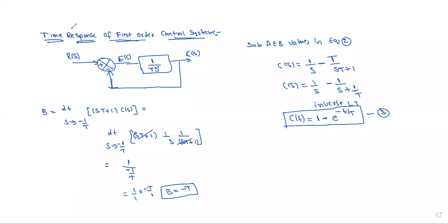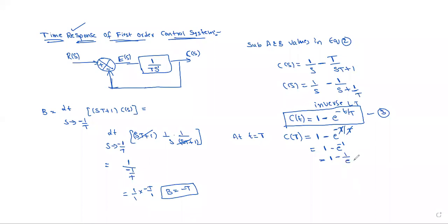Now we find different time responses. At t equal to capital T: c(T) equals 1 minus e to the power of minus T/T. The T's cancel, giving 1 minus e to the power of minus 1, which equals 1 minus 1/e. Using a calculator, this value is 0.63.